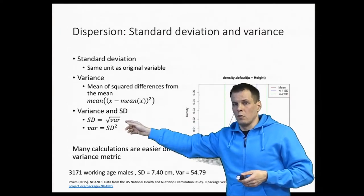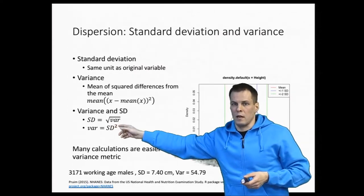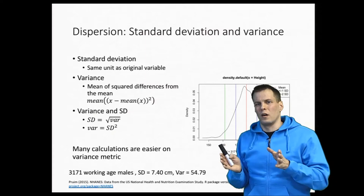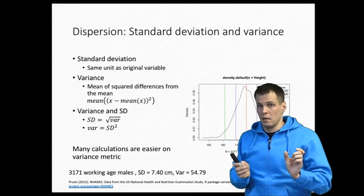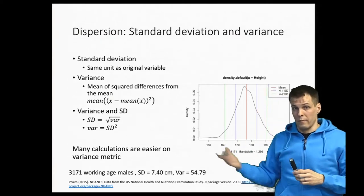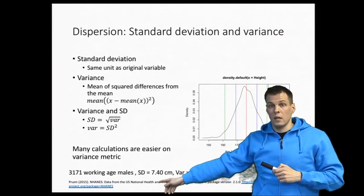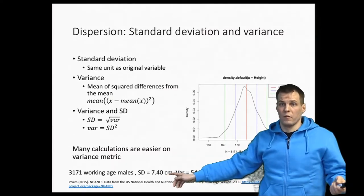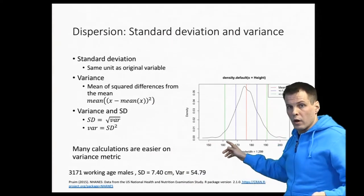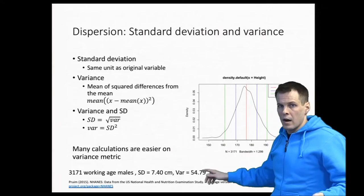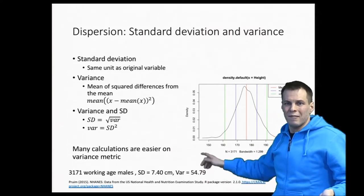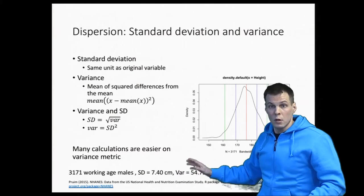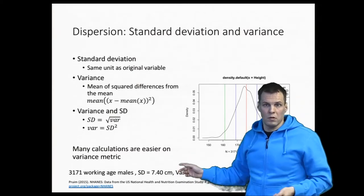Variance and standard deviation are related: the standard deviation is the square root of the variance, and variance is the square of the standard deviation. When we want to interpret how a variable is distributed, we look at the standard deviation because it's in a metric that's easier to understand. For example, a standard deviation of 7 centimeters lets us immediately say that about 60 percent of people are between 170 and 185 centimeters. Variance — in this case 54.79 — doesn't directly tell us where people are located, but it's useful for more complicated models. Sometimes you report both.